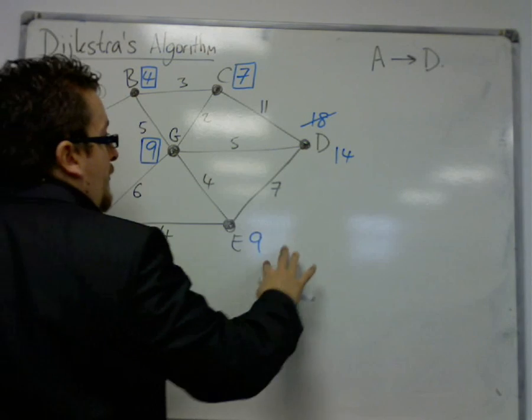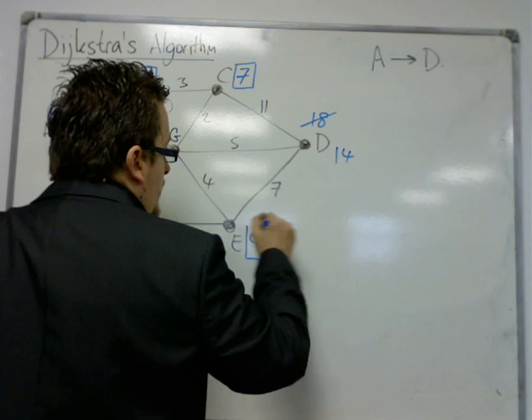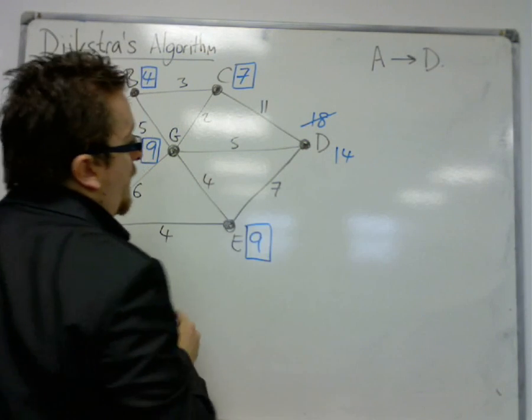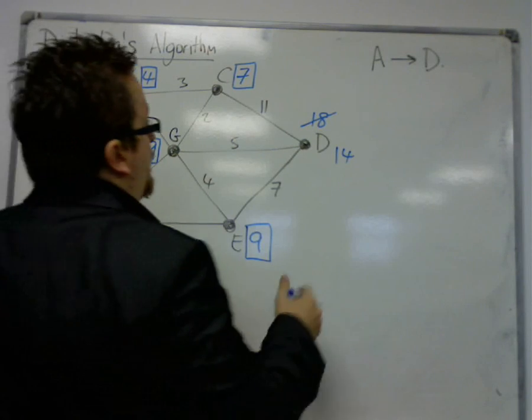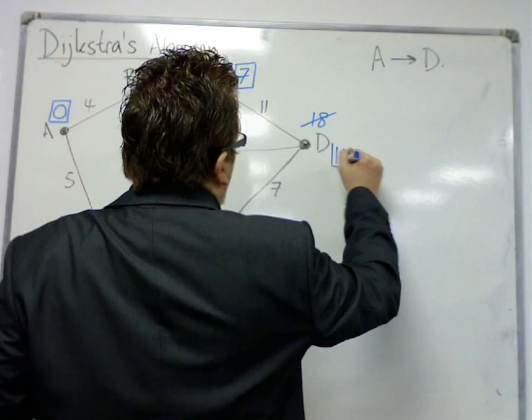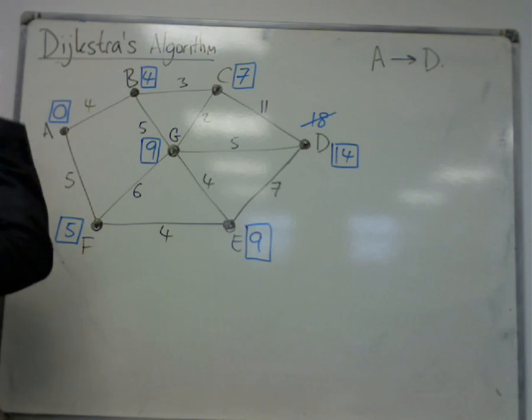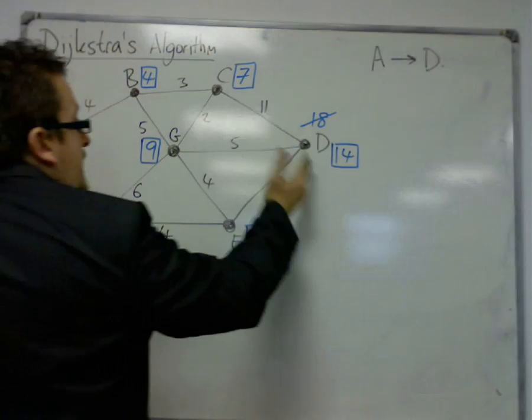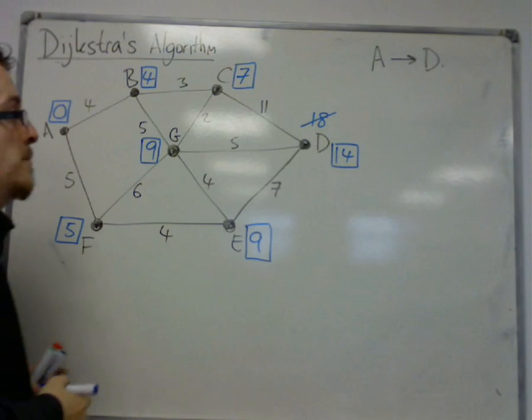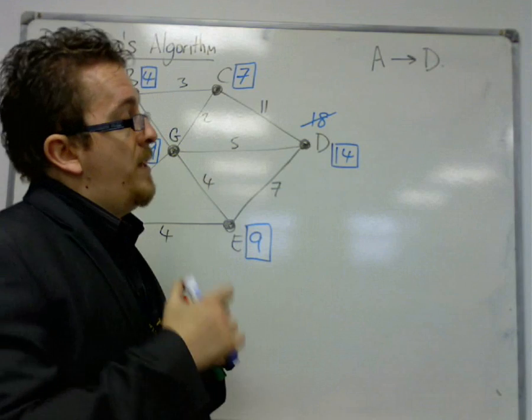Now the two unboxed 9 and 14, so I pick the 9. 9 and 7 is 16, so don't bother choosing it. And finally, the least unboxed, the only one I've got left, is the 14, which I box. So I can see that the shortest distance from A to D is 14, but it hasn't necessarily given me the route.